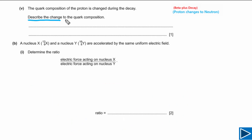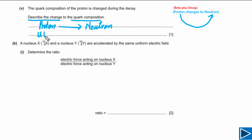For part five, we need to describe the change in quark composition as a proton changes to a neutron. Proton consists of two up quarks and one down quark (uud), but neutron consists of one up quark and two down quarks (udd). So the change is: two up quarks and one down quark change into one up quark and two down quarks — in other words, one up quark changes into one down quark. This question has one mark.